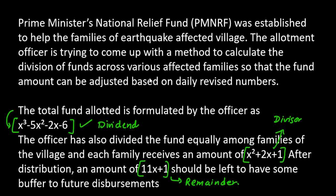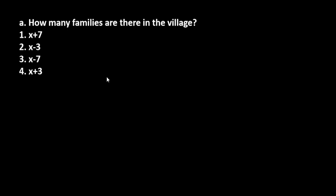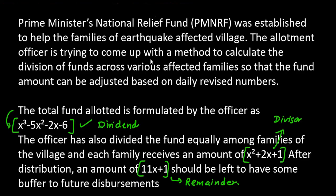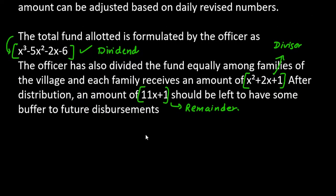We will see how we can work through our equation. There are five parts that we have to solve. The first part says how many families are there in the village. They have given us the total fund, told us how much amount we got, and the remainder tells us how much we have to save. So basically, what we have to do here is find the quotient. We will divide — we will divide the dividend by the divisor and find the quotient. The dividend is x³ - 5x² - 2x - 6.